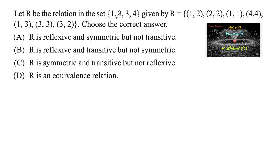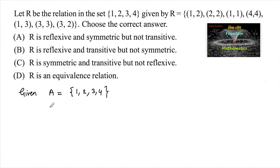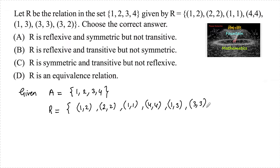Let R be the relation in the set {1, 2, 3, 4} given by R = {(1,2), (2,2), (1,1), (4,4), (1,3), (3,3), (3,2)}. We need to check the conditions for reflexive, symmetric, and transitive. Let set A = {1, 2, 3, 4}, and the relation R is defined on set A.